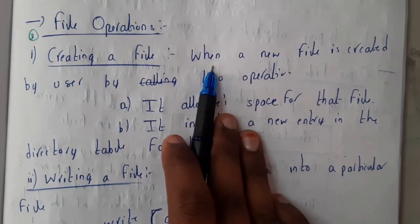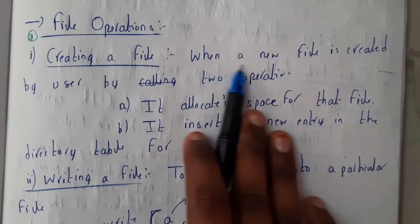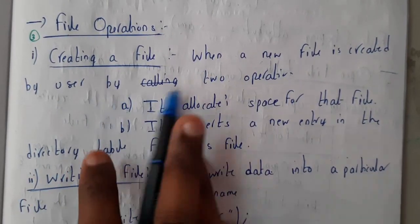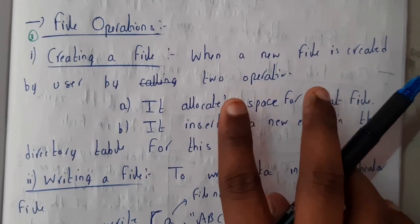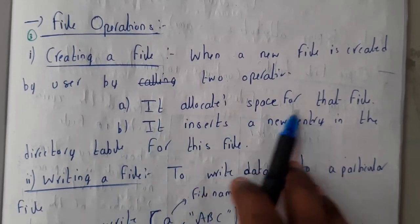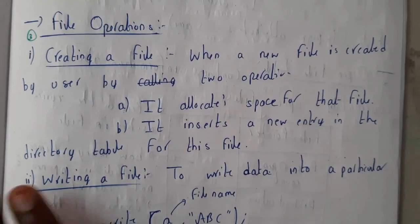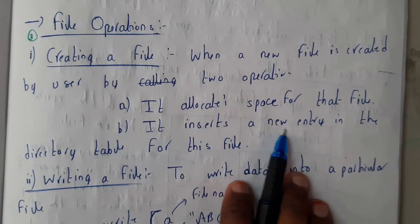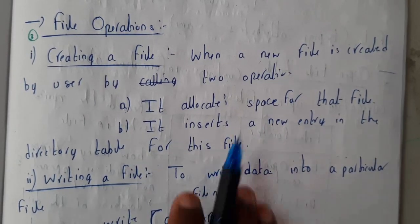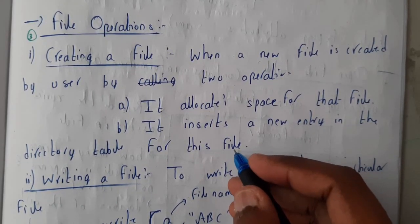The first operation is creating a file. When a new file is created by the user, two operations happen indirectly: it allocates some space for that particular file in a memory location, and it inserts a new entry in the directory table for this file.